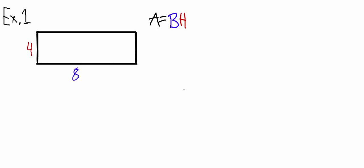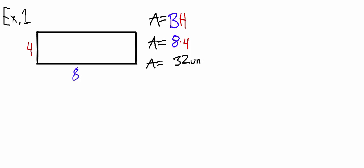So, now you want to plug in what you know — your base being 8 and your height being 4. So, area equals 8 times 4, which is 32. Now, when you're solving for area, if you don't know if it's inches, meters, or whatever, it's going to be units. And your answer is always going to be squared. So, area equals 32 units squared.